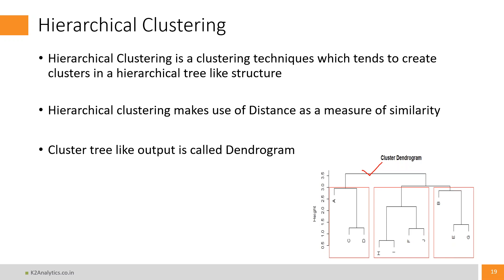This technique makes use of distance as a measure of similarity, or you can also say it makes use of distance as a measure of dissimilarity. Less the distance, the two objects are similar. More the distance, the two objects are dissimilar. The output which is shown is called a dendrogram — spelling is D-E-N-D-R-O-G-R-A-M.